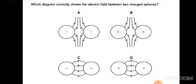Which diagram correctly shows the electric field pattern between two charged spheres? Electric field comes out of positively charged materials and points into negatively charged particles. Option B is correct because in this option the electric field is coming out of the positively charged sphere, while the others show wrong patterns.